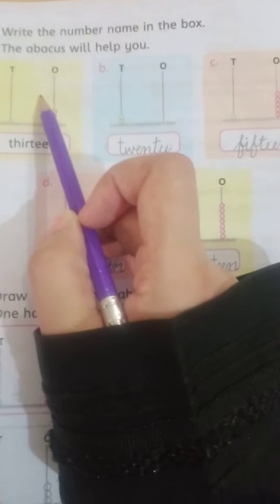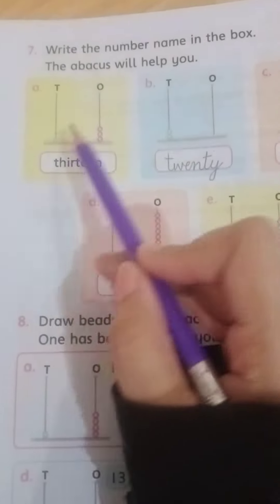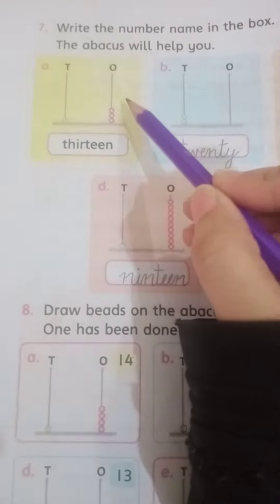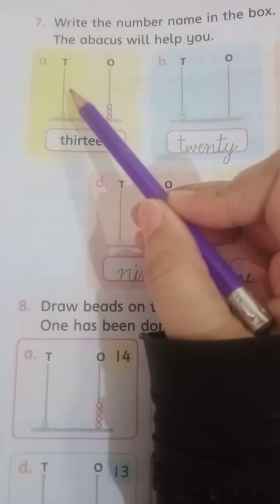Aaj ke lesson mein students, hum kal ki tarah karenge ke tens or ones. Jaise ke maine aapko bataya tha ke right side pe jo digit hota hai, woh ones kehlata hai, or left side ka digit tens kehlata hai.